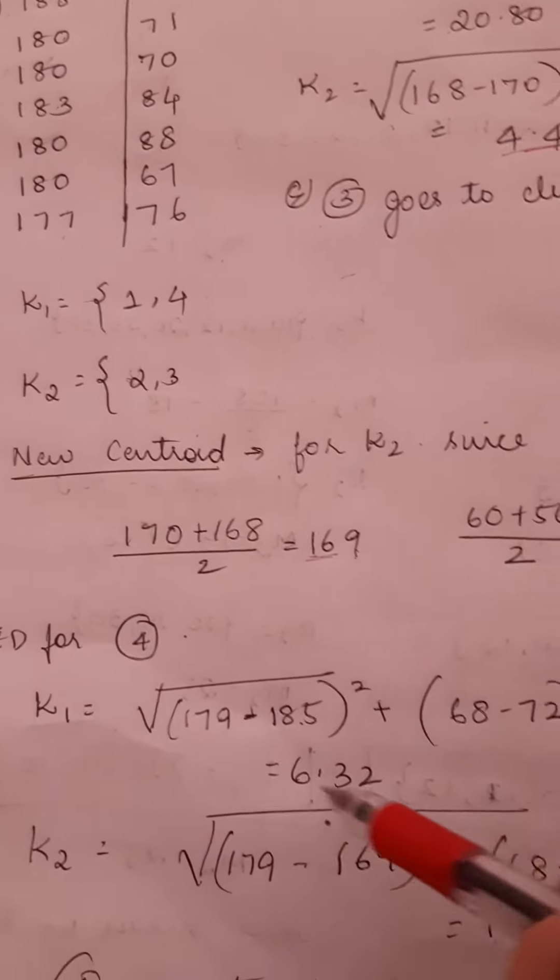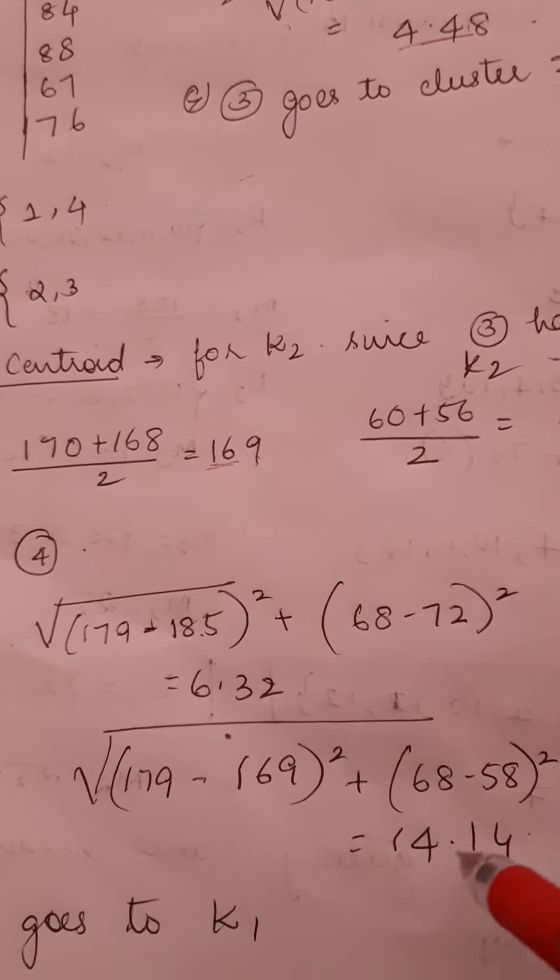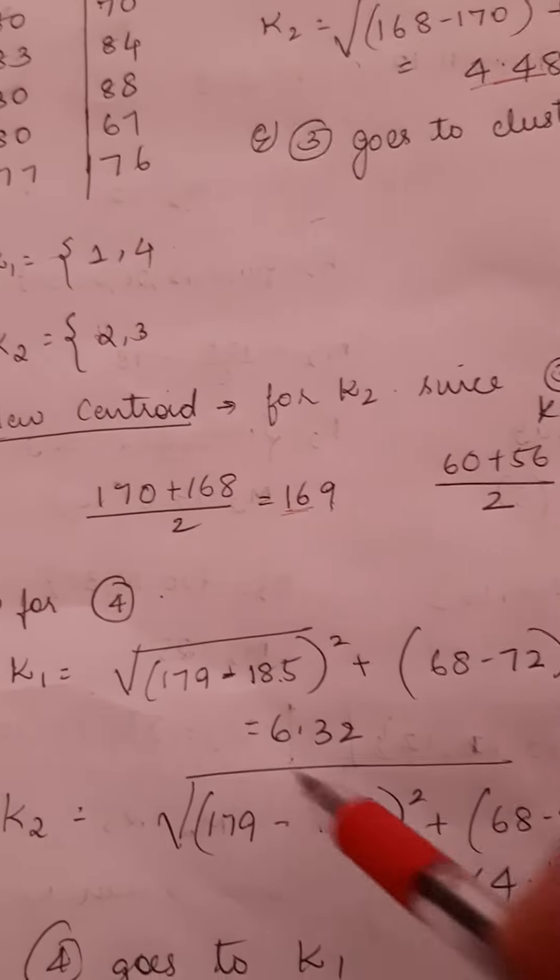I get from cluster K1 a difference of 6.32, and from cluster K2 is 14.14. That means the fourth row will belong to cluster K1 since the difference is lower. So that is why K1 now has rows 1 and 4.